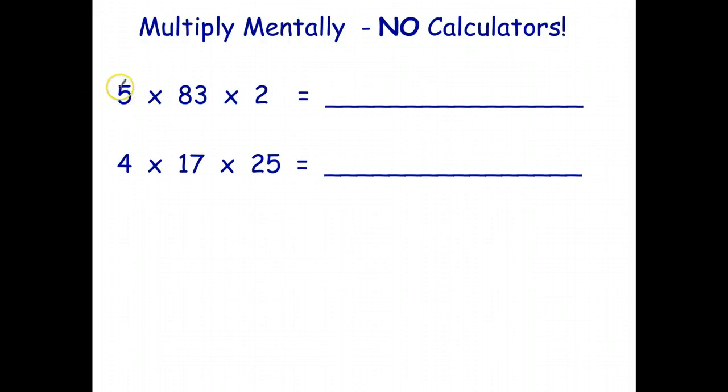Now the secret is, of course, this is written as 5 times 83 times 2. But when you're multiplying, you can multiply in any order. Order doesn't matter. So 5 times 2 is 10, and 10 times 83 is 830.